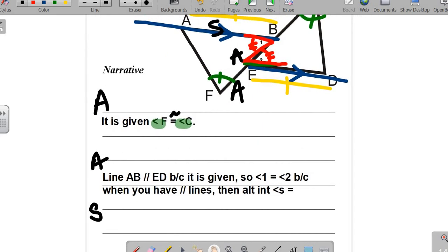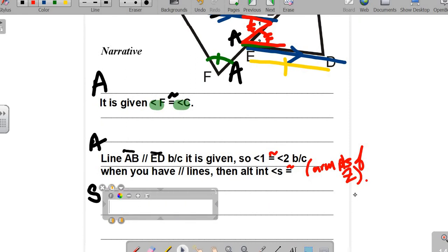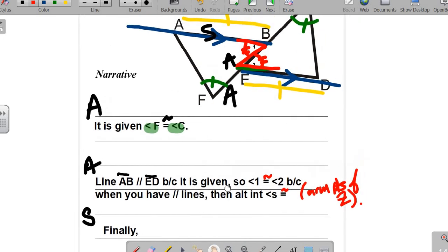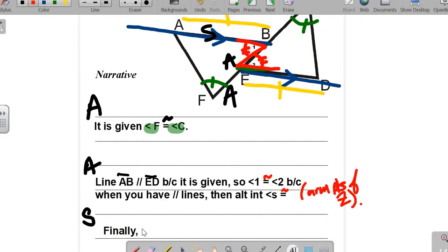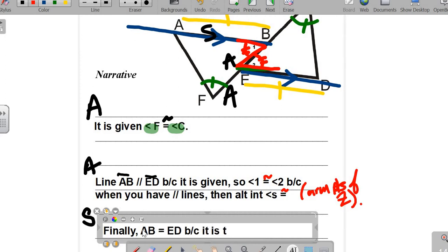Line AB and ED are parallel. Why do we know that's true? It's given. So angles one is congruent to angle two because when you have parallel lines, alternate interior angles are congruent. If instead here you put armpits of Z, I will totally take that. Last but not least, we're going to talk about those sides.